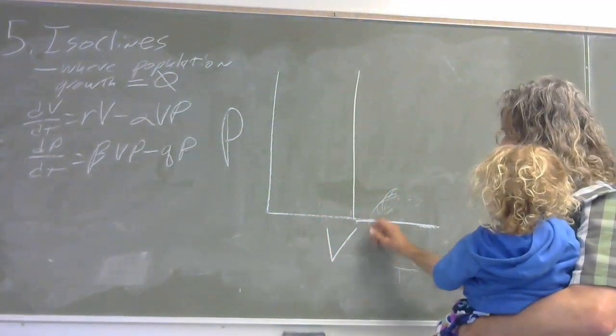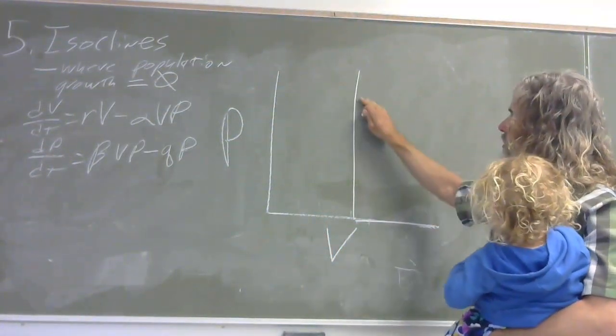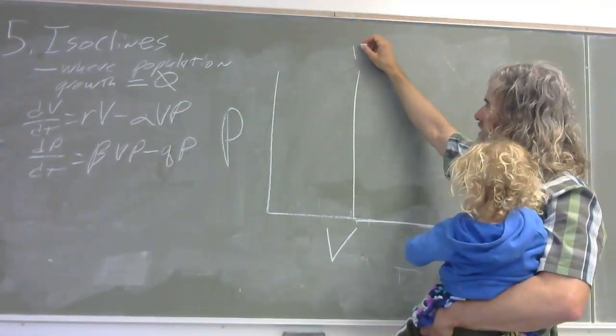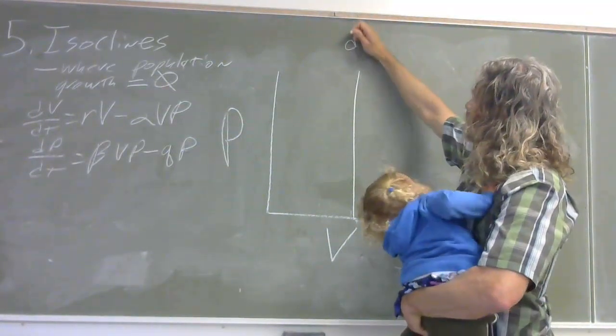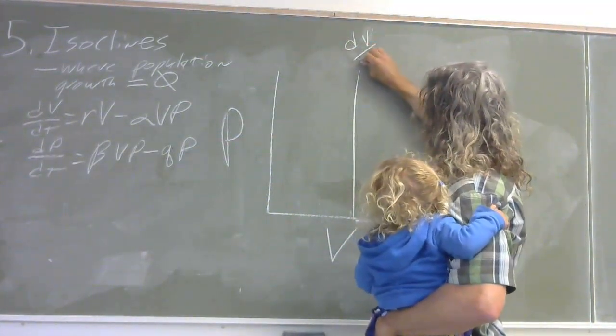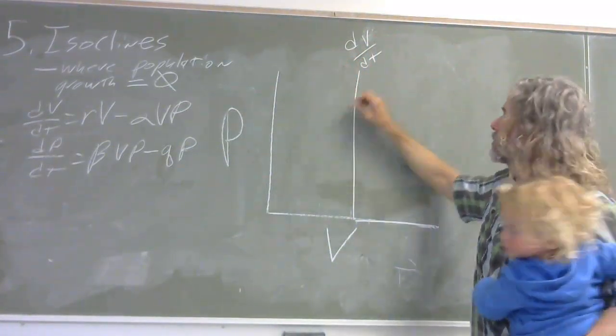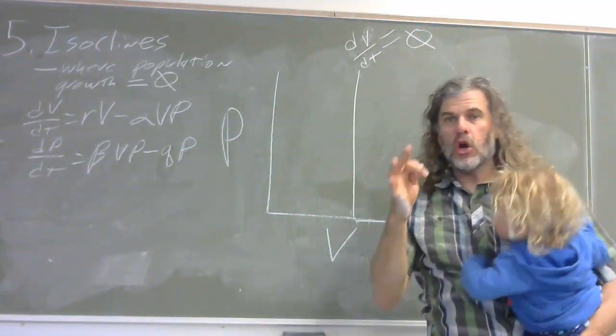And it's just a straight up and down line. Pretty simple. Right here, all along this line, this is what this is representing, all along this line, the growth rate is equal to zero. So dV/dt, the change in the prey population per unit time is zero. There's no growth.